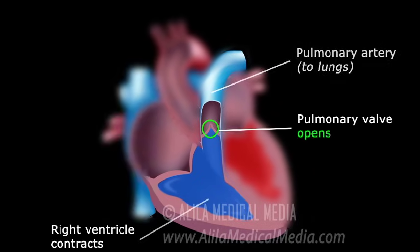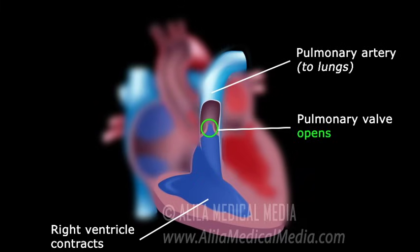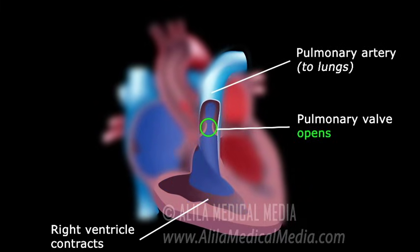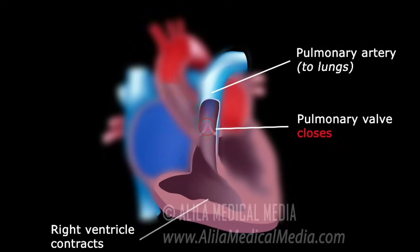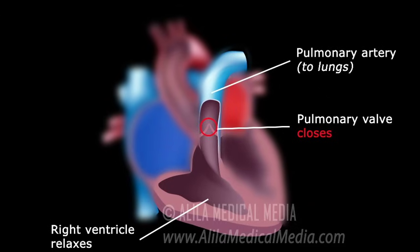The right ventricle contracts, the pulmonary valve opens, and blood is pumped into the pulmonary artery and to your lungs. The pulmonary valve closes to prevent blood from flowing back into the ventricle.